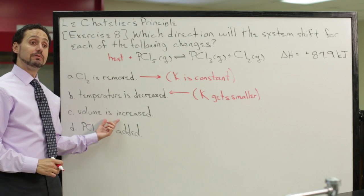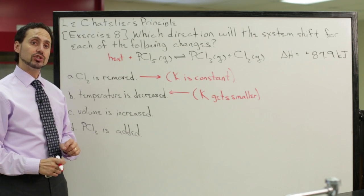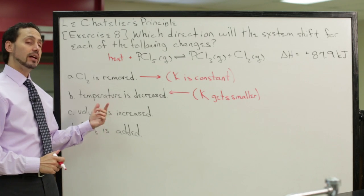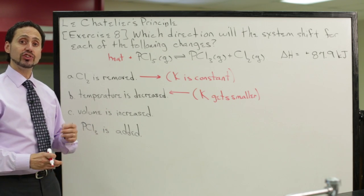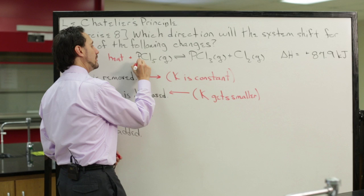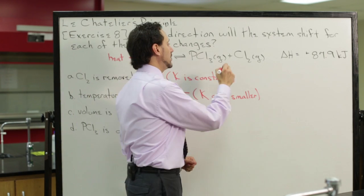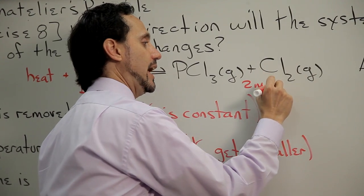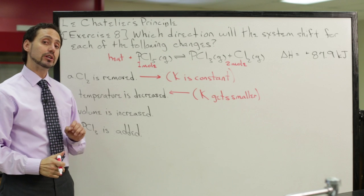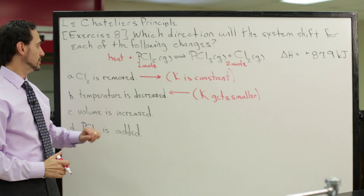What about if the volume is increased? What we have to pay attention to with volume changes is the moles of gas on each side of the equilibrium. On this side, we have one mole of gas. On the product side, we have two moles of gas. Remember that we're only concerned about moles of gas when we're changing the volume or pressure.